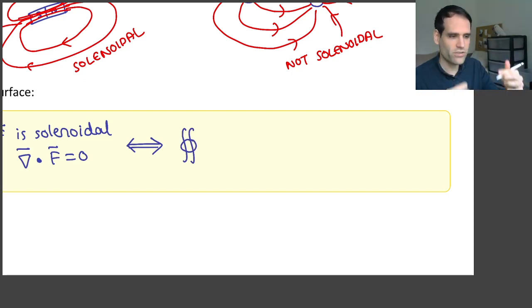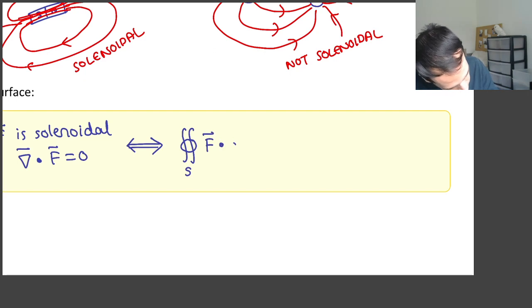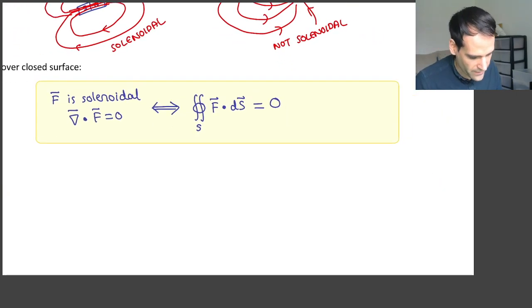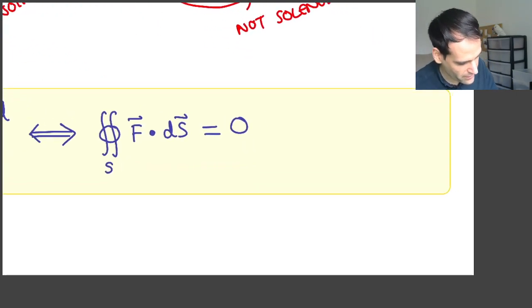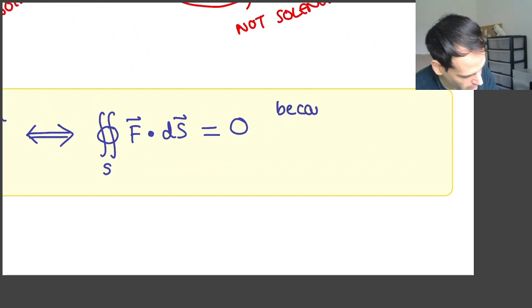And therefore the flux over a closed surface—so you define a closed surface and you calculate the flux of this field—this flux must always be zero. And this actually makes perfect sense because there are no sources and no sinks.